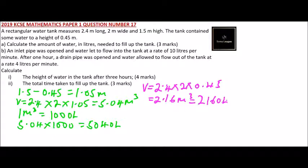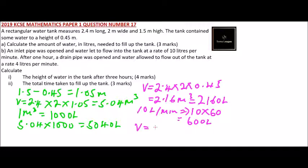The inlet pipe delivers 10 liters per minute. For one hour — that is 60 minutes — it will deliver 600 liters. We add this to the initial volume: 2160 + 600 = 2760 liters. So by the time the outlet pipe was opened, there were 2760 liters in the tank.